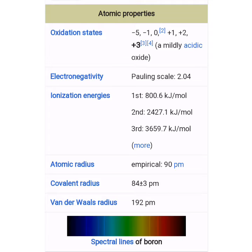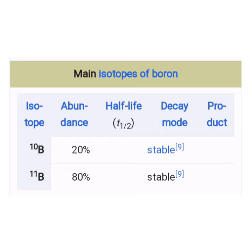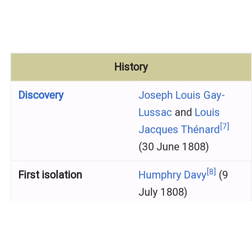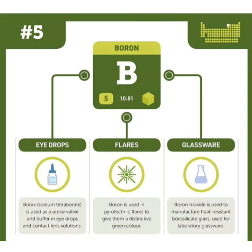Atomic radius: empirical — 90 pm; covalent radius — 84 ±3 pm; van der Waals radius — 192 pm. Two main isotopes of Boron: Boron-10 with abundance 20%, and Boron-11 with abundance 80%. Boron was discovered by Joseph Louis Gay-Lussac and Louis Jacques Thénard in 1808, and first isolated by Humphry Davy also in 1808.